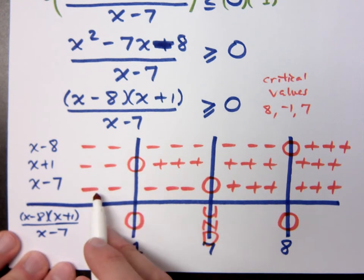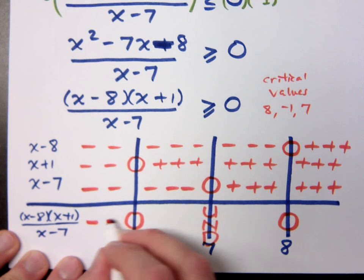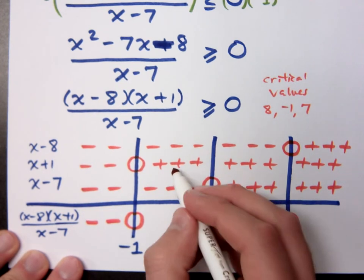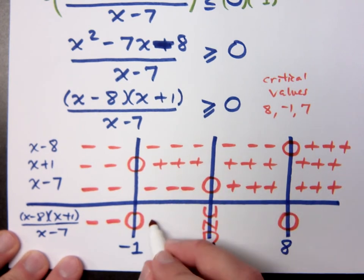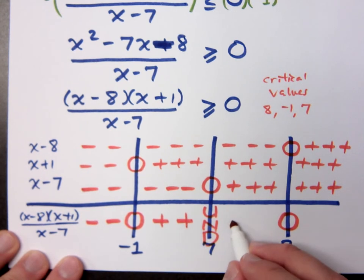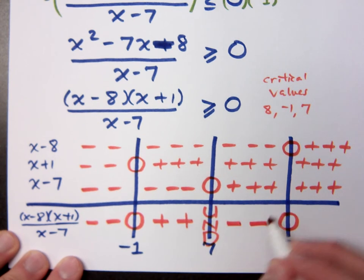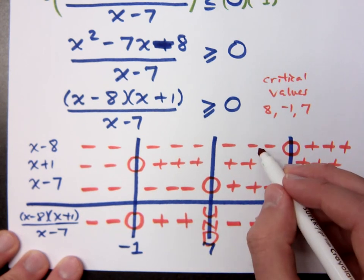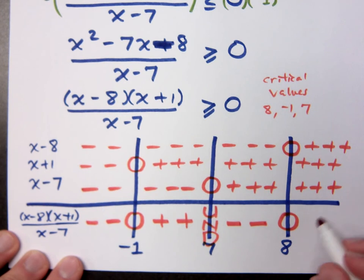The rest of this is determining what your sign is going to be when you have all these factors together. When you have negative, negative, and negative all together, what is that? Negative. What about here? Negative, positive, negative? It's positive. What about here? Negative. Negative factor with two positives is going to be negative, and on the right side, everything is positive, so everything is positive there.